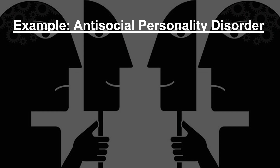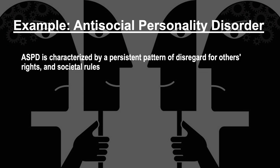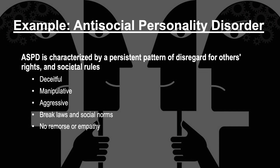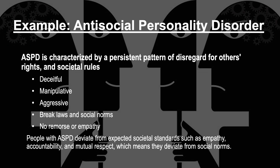A clinical example that comes up further in the course is antisocial personality disorder, or ASPD. A person with ASPD displays persistent patterns of disregard for others' rights and societal rules, and often engages in deceitful, manipulative, or aggressive behaviour. They often break the law without experiencing any empathy or remorse for their actions. Therefore, people with ASPD do not conform to expected societal standards such as empathy, accountability, and mutual respect, meaning they deviate from social norms and would be considered abnormal.